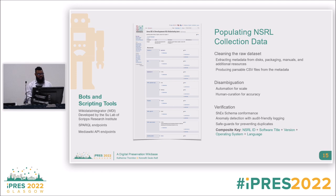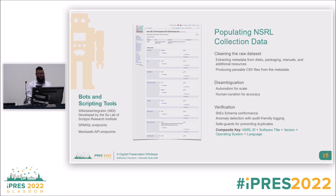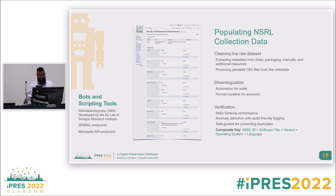After we cleaned the data set, we wanted to disambiguate. We wanted to make sure that when we are talking about Microsoft Word, it is the specific version and the specific language. So we really wanted to be as fine-tuned as possible by going through and human-curating the data set to make sure there are no edge cases or bugs, and then in an automated fashion scoring each record with a complexity score to make sure everything is going into our Wikibase safely.